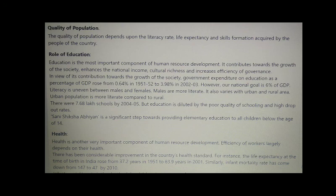Literacy is uneven between males and females — males are more literate. It also varies with urban and rural areas; urban population is more literate compared to rural. There were 7.68 lakh schools by 2004–05, but education is diluted by poor quality of schooling and high dropout rates, which is a significant step towards providing elementary education to all children below the age of 14.